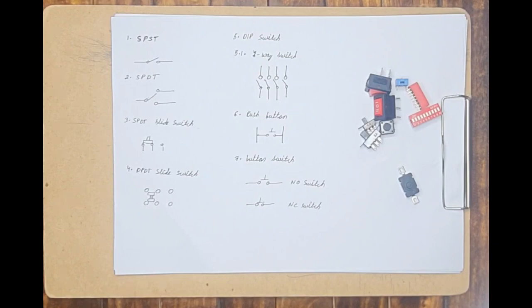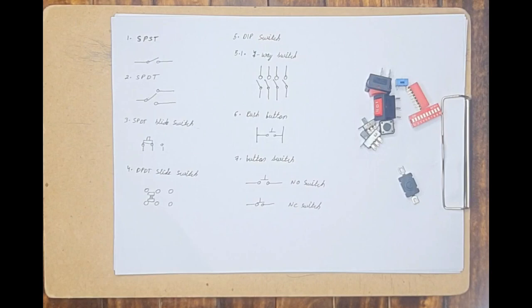In the next second video I talked about the different types of wires that I generally use in electronics and how you can check these wires with the help of a multimeter and also with the help of a small circuit. If you have missed those videos, I have kept a link in the description below and you can also watch those videos by clicking on the eye icon at the top of the video.